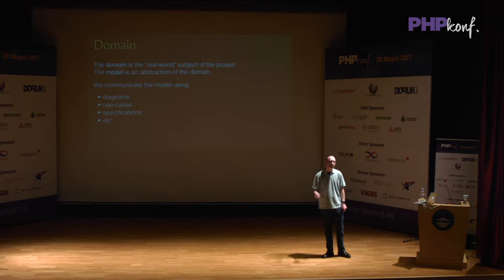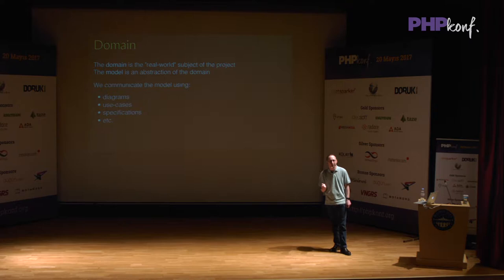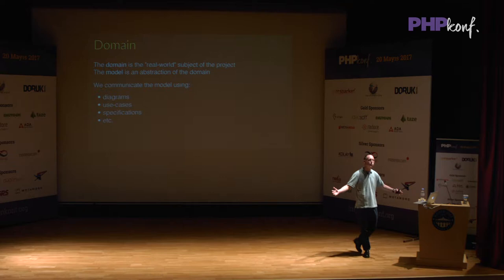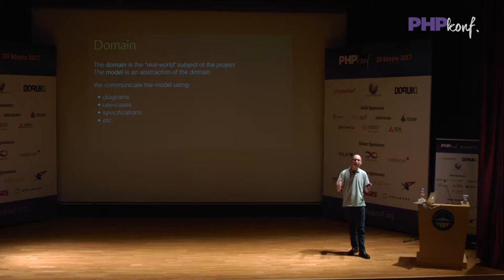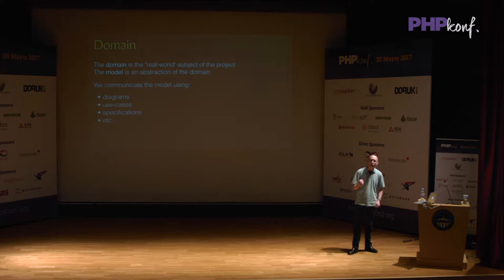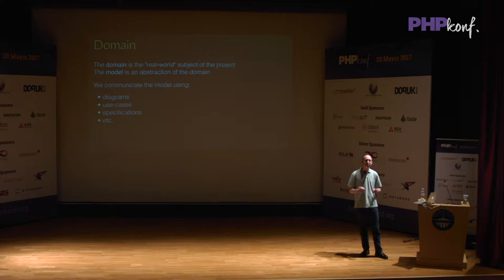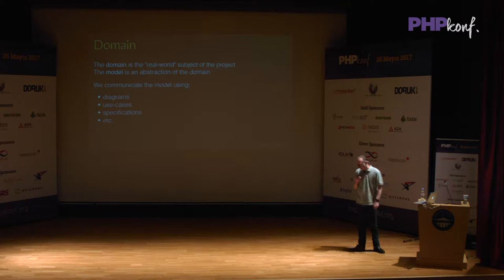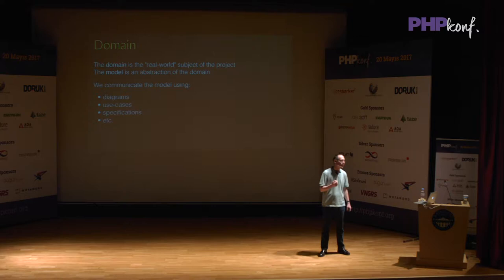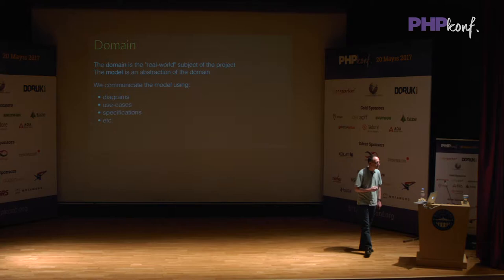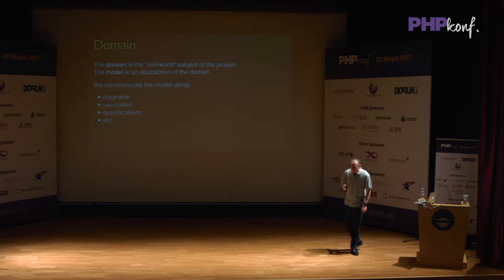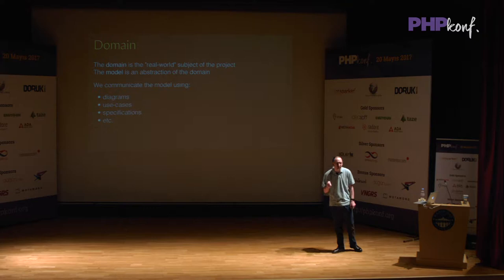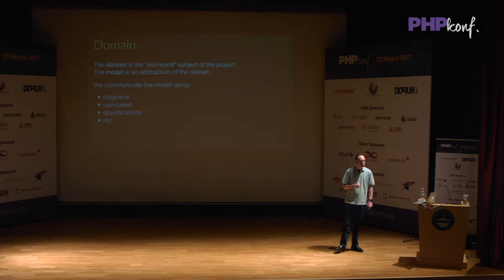Then we have another word: model. A model is an abstraction, an implementation of a domain in software. It's a simplification, because we can't create the whole world inside our application. We pull in the bits that are relevant to create a successful application. That is our model — a representation in software of a real world problem. To define the model, we have to work out what the domain is, and the way we do that is by diagrams, use cases, specifications. These are all very non-software things, and that's what the key thing is about domain-level design — it's all about communication.